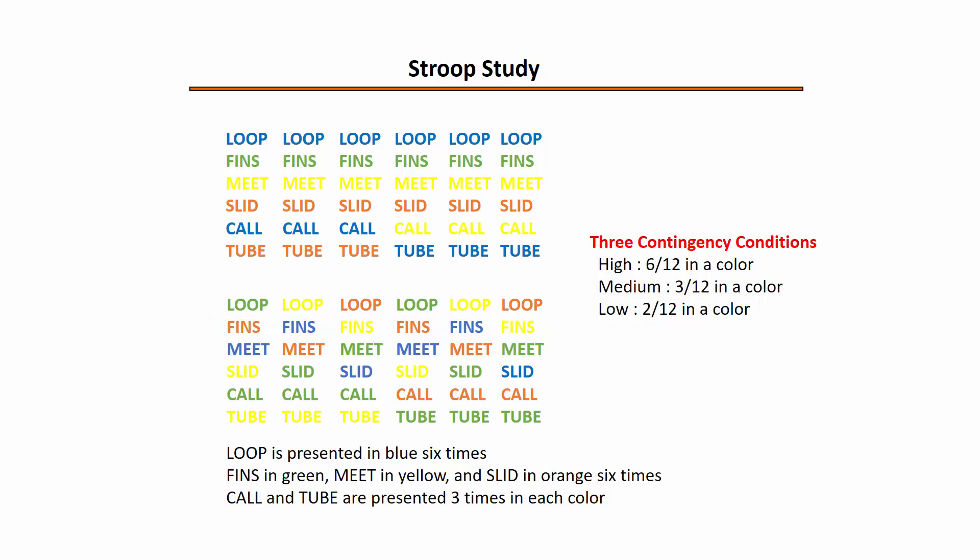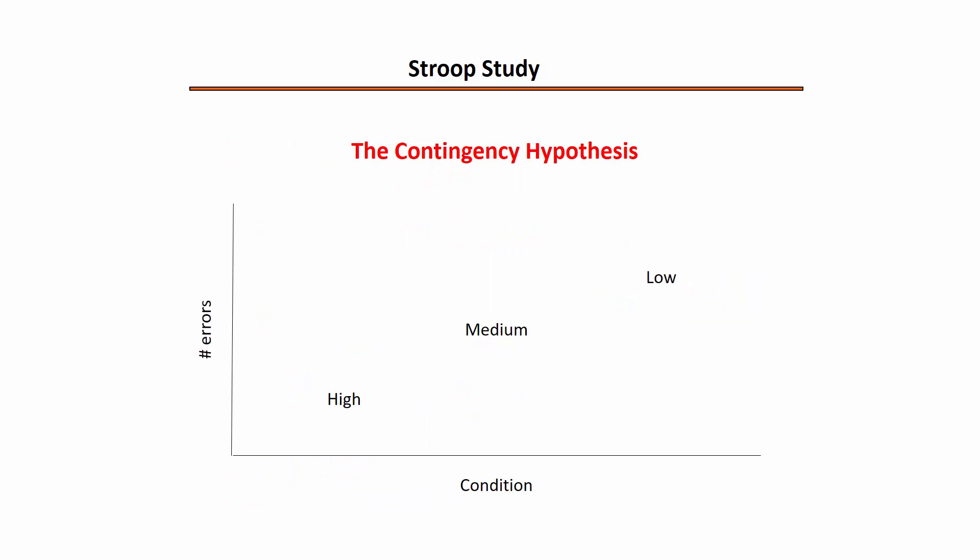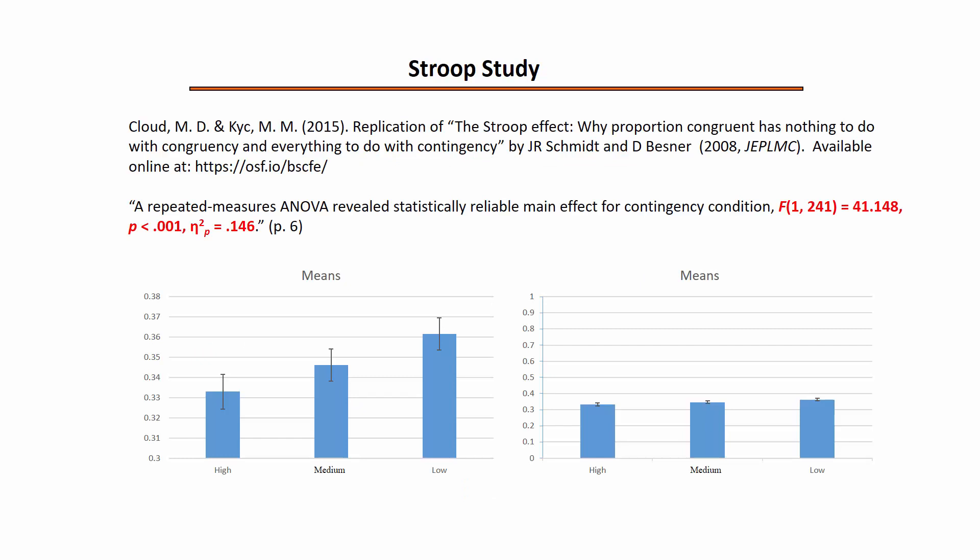As the 432 word-color pairs were presented, the participant was required to select the correct color within 500 milliseconds. The general expectation was that the high contingency condition would produce the fewest number of errors because participants had learned the word-color association. Errors were then expected to increase for the medium condition and be greatest for the low contingency condition.